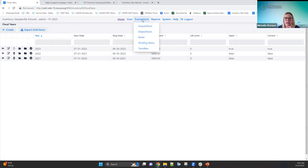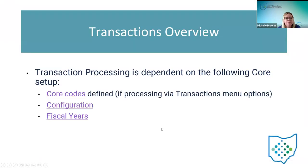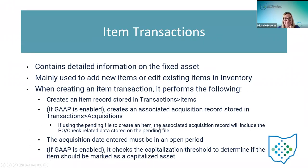Now going into transactions. There are five different options: items — where we go in to process and add items, edit items — these are tags already on the system. When an item is created, the related acquisition gets created and stored underneath transactions under acquisitions. If the GAP flag is enabled and you're using the pending file to create an item, that associated acquisition record will include the purchase order information, PO number, item number, vendor information, and the account code used on the PO.